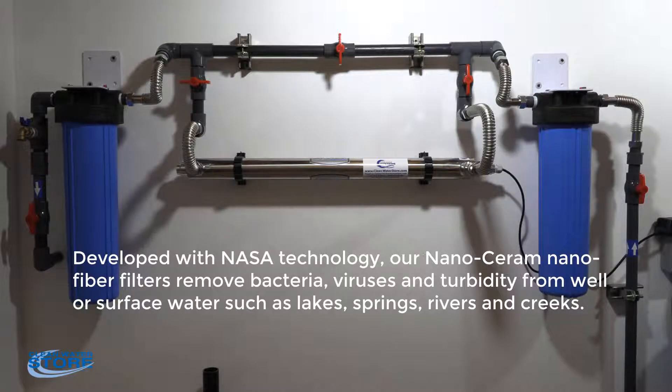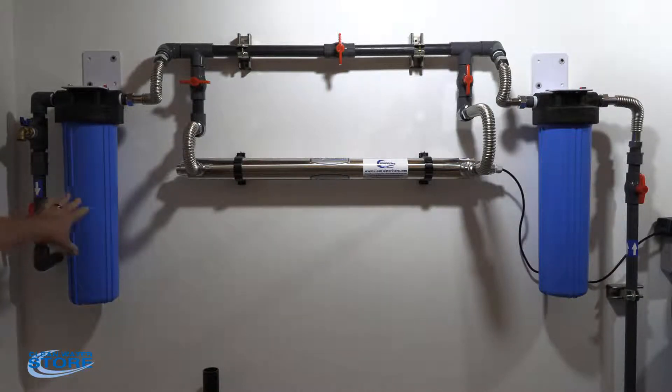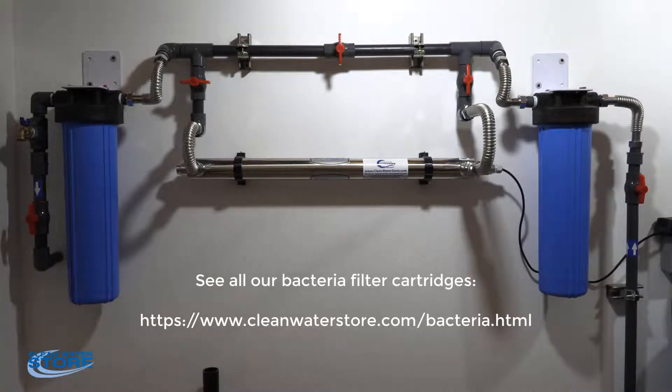So, also, they make a 2.5 inch diameter by 20 cartridge for these. And they sell a large bundle where you can put several of these in there if you need a larger flow rate than the 20 gallons per minute with two of these.